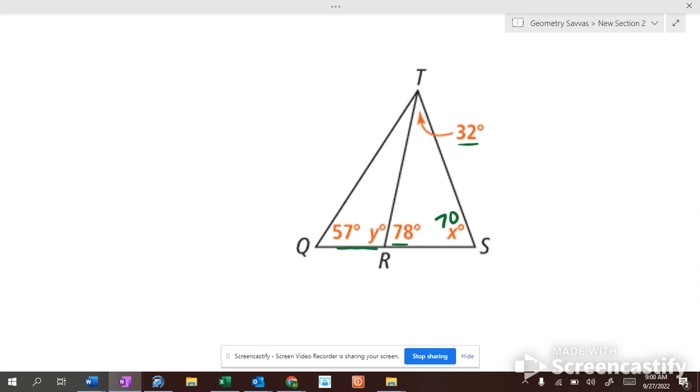How can I figure out angle y? Well, is this a straight line? So, this is 78. What's left on the other half of the straight line? 102. What's 32 plus 70? 102. These two add up to be this one, doesn't it?